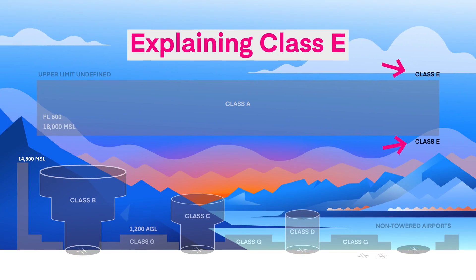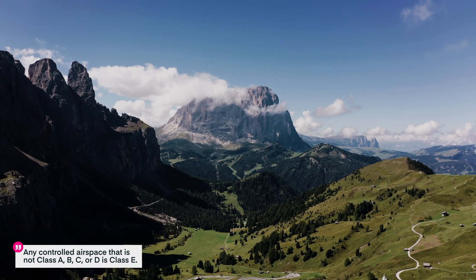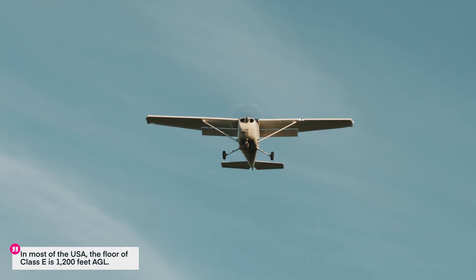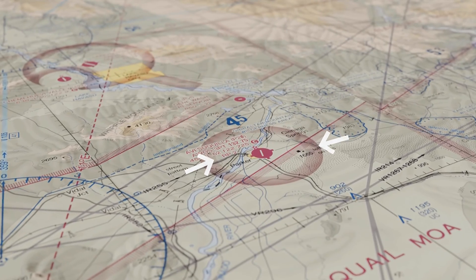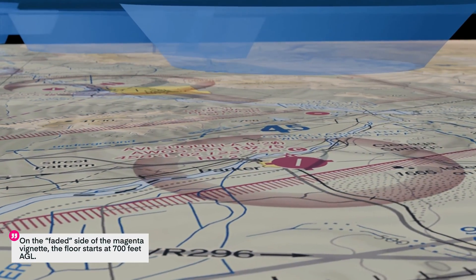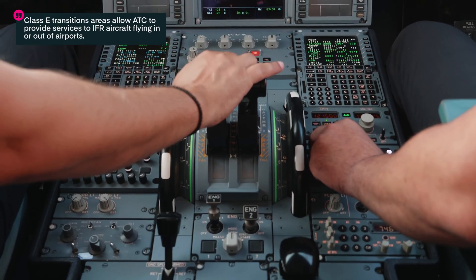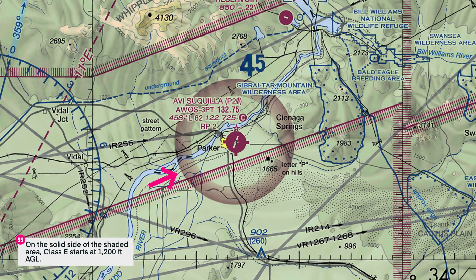Next is Class E airspace, or Class Echo. Any controlled airspace that is not A, B, C, or D is Class E — think of E as everywhere else. It allows ATC to manage IFR aircraft outside of other controlled airspace. In most of the country, the floor of Class E airspace is 1,200 feet AGL. To know if it starts lower, look for the shaded magenta shape on the sectional chart. The FAA calls these vignettes, and they depict changes in the floor of Class E airspace. On the faded side, the floor starts at 700 feet AGL — these are called transition areas, which allow ATC to provide services to IFR aircraft flying in and out of airports, especially useful at airports without a controlled tower. On the solid side of the shaded magenta, Class E starts at the usual 1,200 feet AGL.